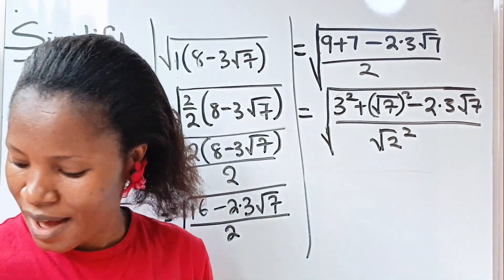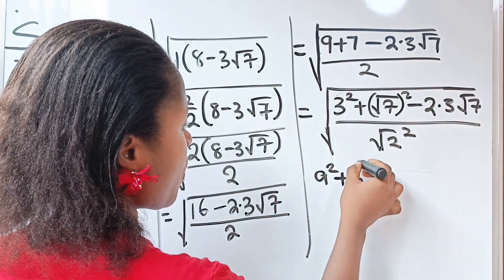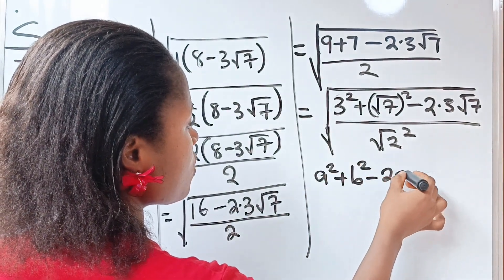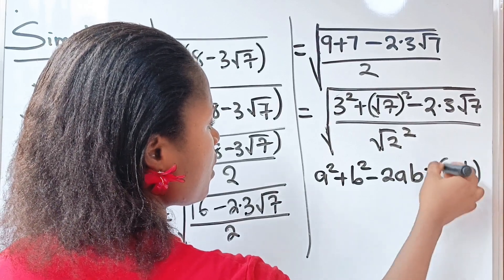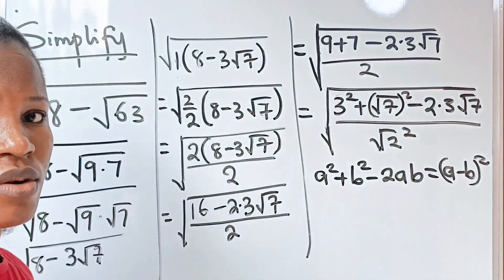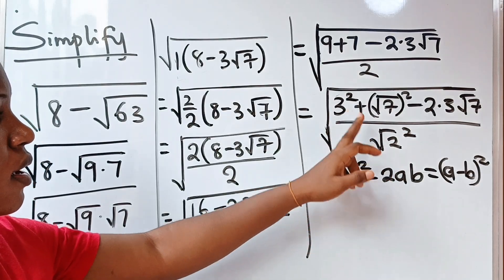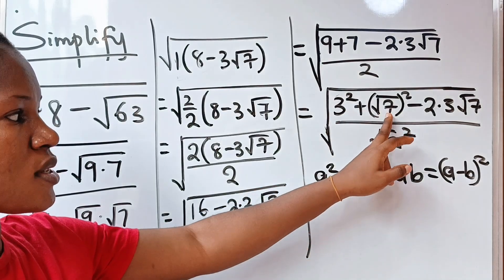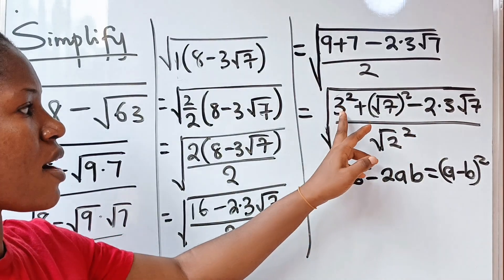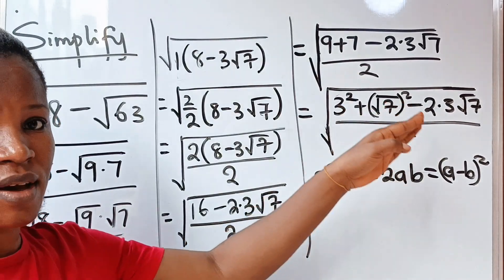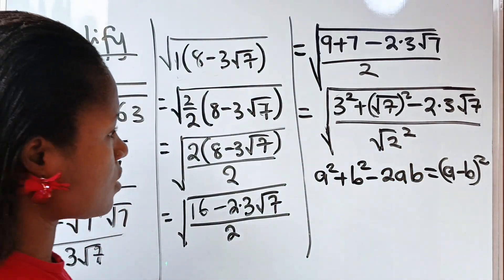Remember that a squared plus b squared minus 2ab is equal to (a minus b) all squared. Now if you look at this, you can see that a here is 3 and b is root 7. So that means we can write the numerator as (3 minus root 7) squared. Let's go ahead and do that.